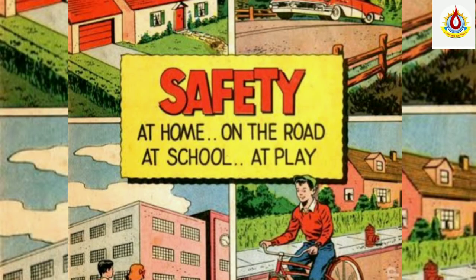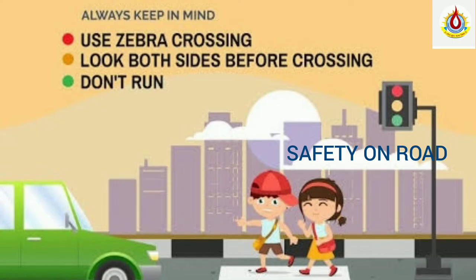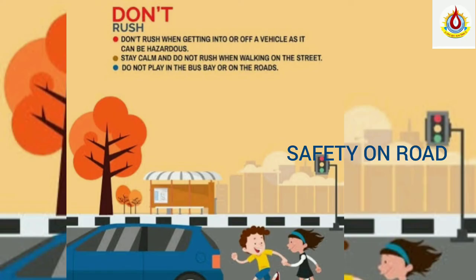Now we will learn safety at home, on the road, at school, and at play. Starting with safety on the road: always use sidewalks, also known as footpaths, to stay safe. Use zebra crossings. Don't run. Look both sides before crossing the road. Never stick your hands outside a vehicle. Don't rush when getting into or off a vehicle as it can be hazardous. Stay calm and do not play in the bus or on the roads.